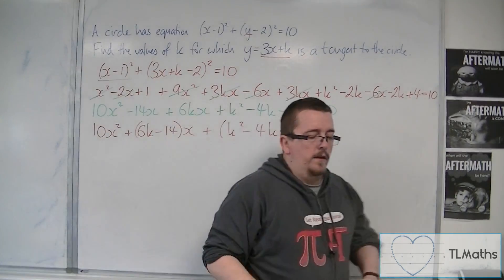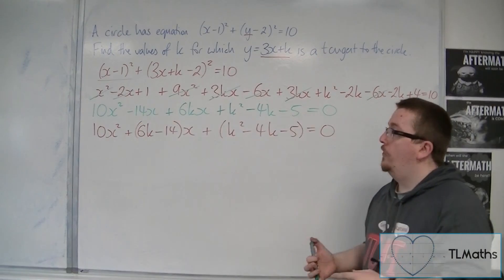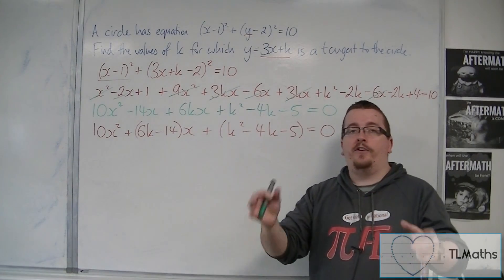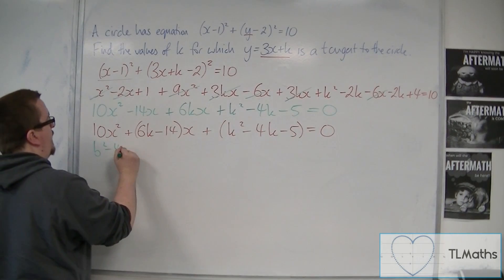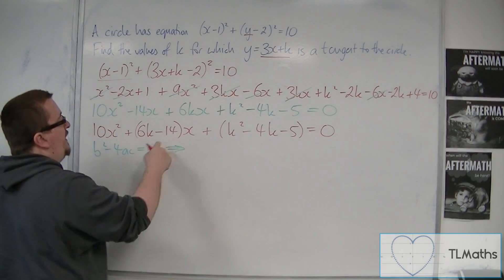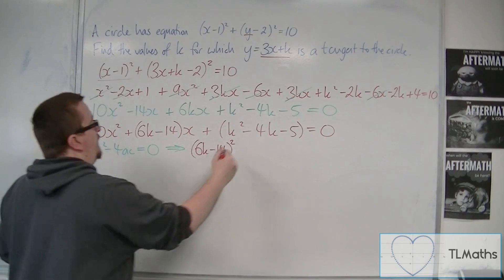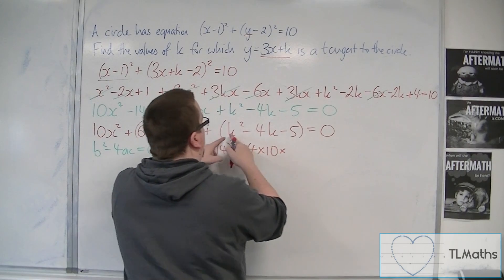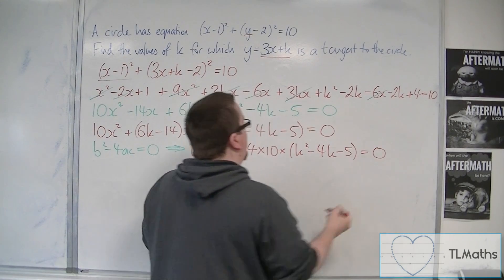This is the quadratic we've arrived at. For the line to be a tangent to the circle, the discriminant of this quadratic must equal zero. So b squared minus 4ac equals 0, where b is (6k minus 14), a is 10, and c is (k squared minus 4k minus 5).